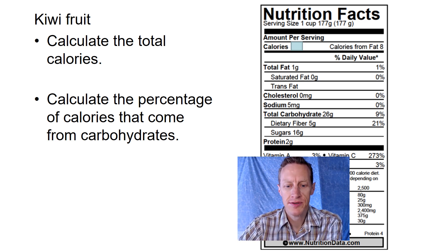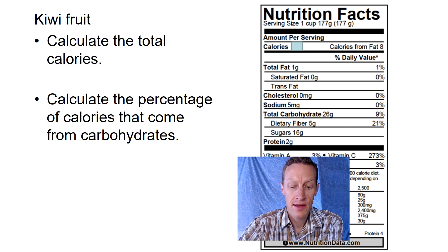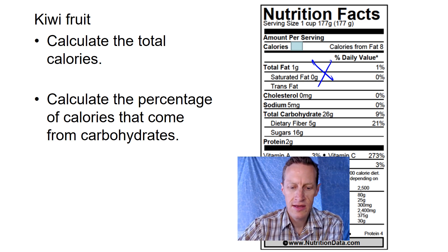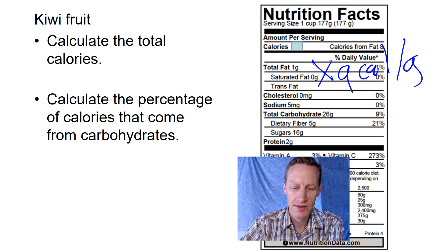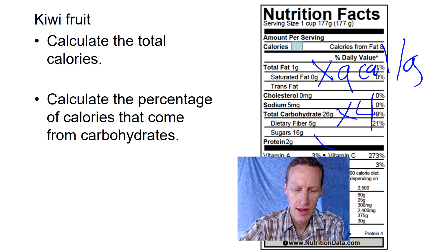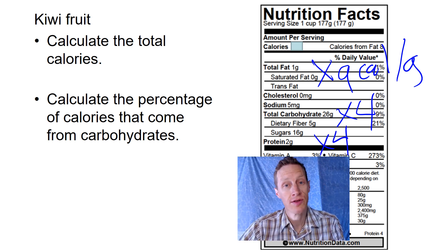Okay, so hopefully you were able to do that. Let's go through how to do that again. To get the calories from fat, we're going to take the grams of fat and multiply by 9 calories per gram. And then we're going to do the same thing for the carbs, multiplying them by 4, and also the proteins by 4.